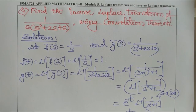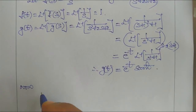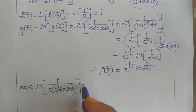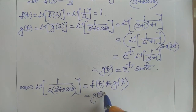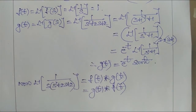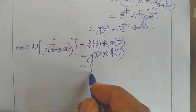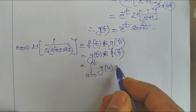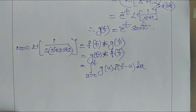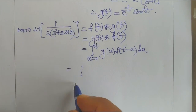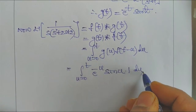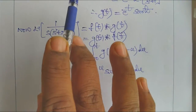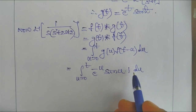So L⁻¹ of 1/[S(S² + 2S + 2)] = F(t) * G(t) = G(t) * F(t). This can be written as the integral from U = 0 to T of G(U) · F(T − U) dU = ∫₀ᵀ e^(−U) sin(U) · 1 dU, since F(T − U) = 1.